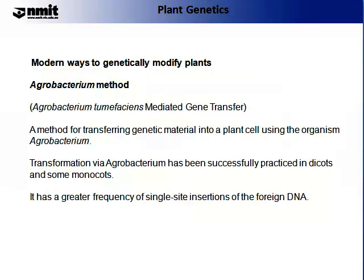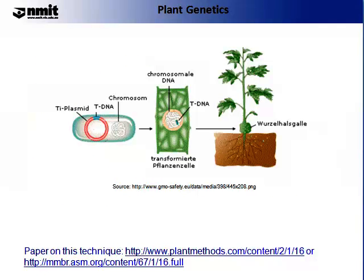Now let us talk about another way that genes can get into plants. This is called the Agrobacterium method — sometimes referred to as Agrobacterium tumefaciens-mediated gene transfer. It is a method for transferring genetic material into a plant cell using the organism Agrobacterium. Transformation via Agrobacterium has been successfully practised in dicots and in some monocots, and it has a greater frequency of single site insertions of the foreign DNA.